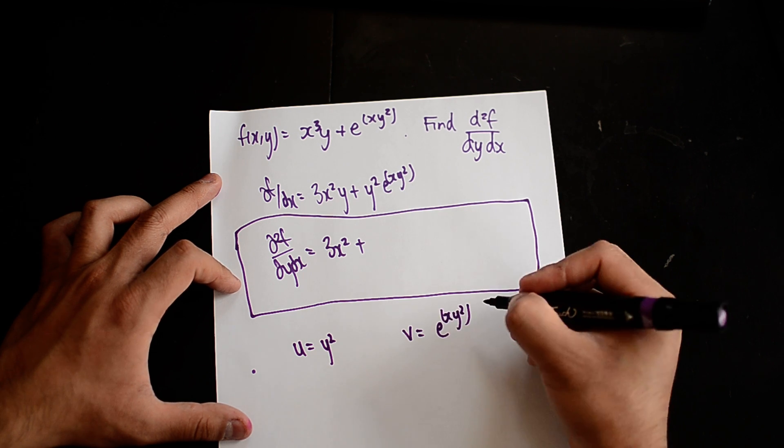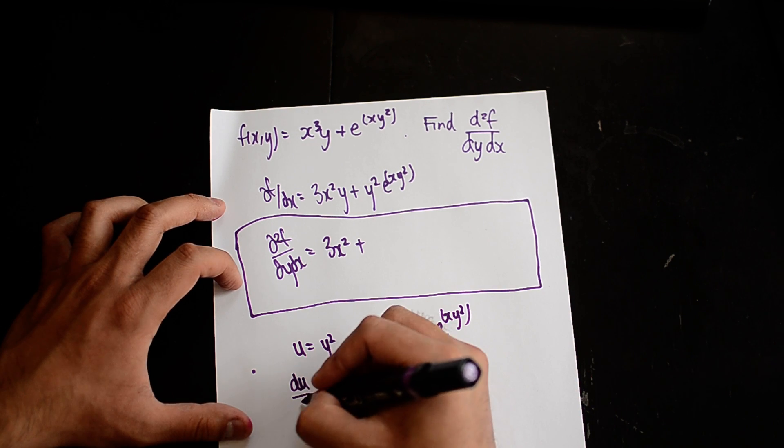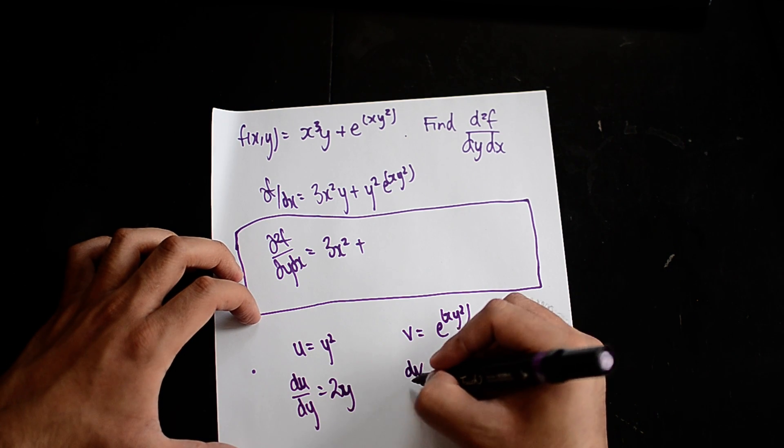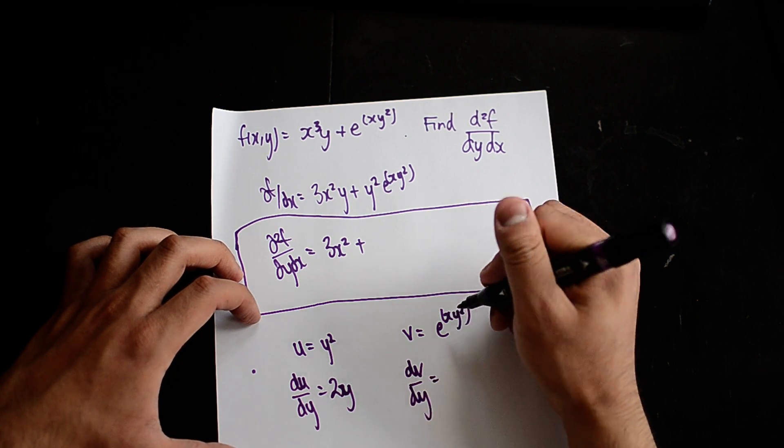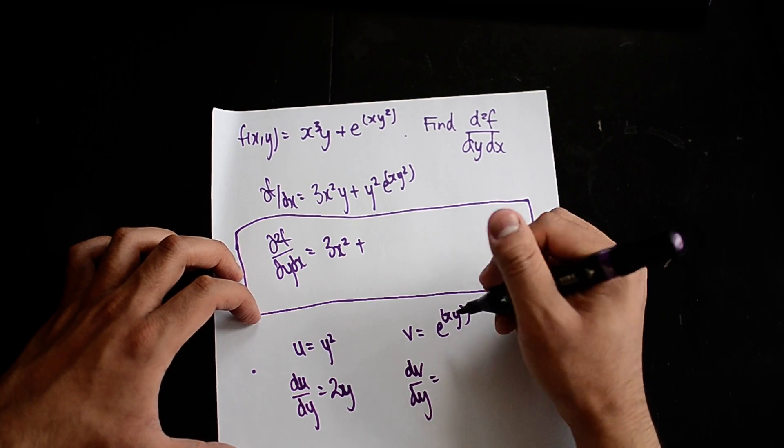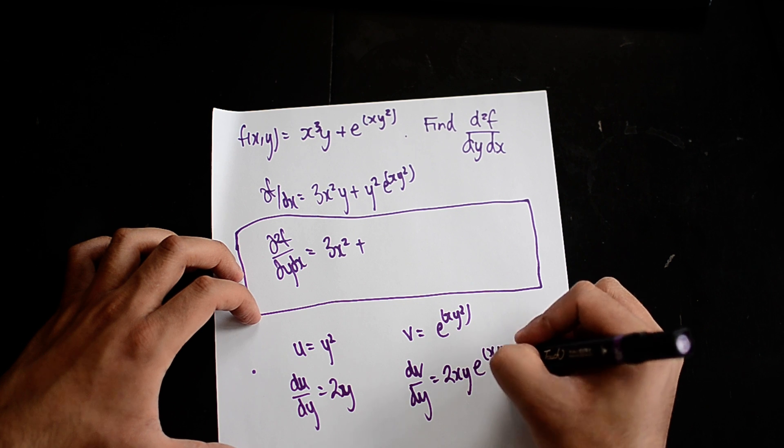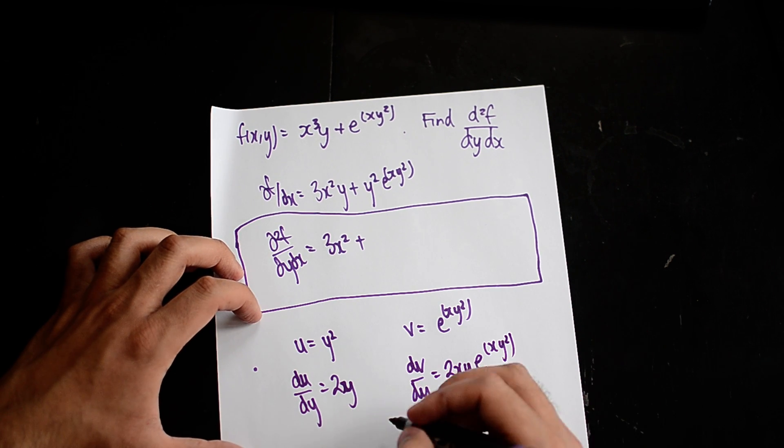And make du over dy be 2y, and dv over dy, we hold the x term constant, and so that means you get 2xy e^(xy²).